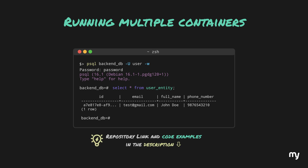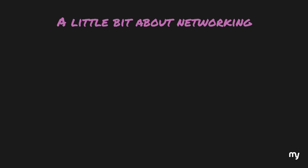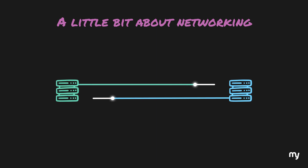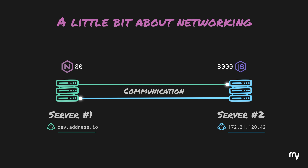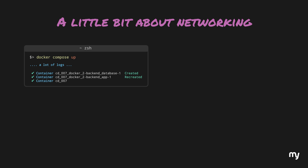Let's talk about how Docker orchestrated this and why we exposed certain ports but not others. First, let's understand how any two applications communicate in general. If two servers each run one application and want to communicate, both need to know two things about the other: the address (typically an IP or DNS) and the port on which the application is running. With those two pieces of information and the right access, the two servers can communicate.